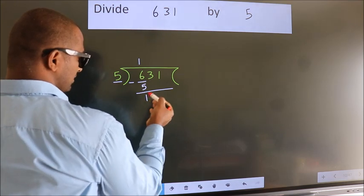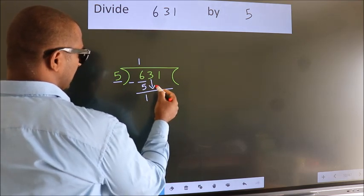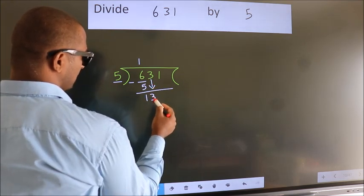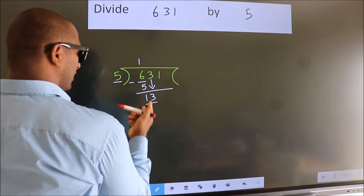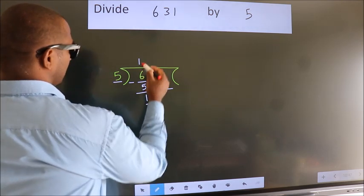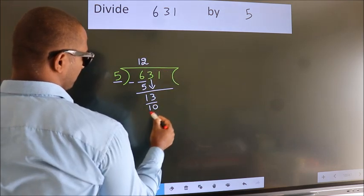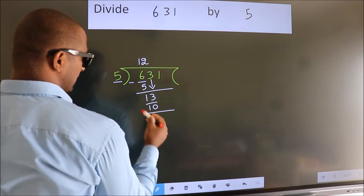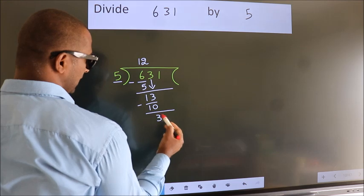After this, bring down the next number. So 3 down, so 13. A number close to 13 in the 5 table is 5 twos, which is 10. Now we subtract. We get 3.